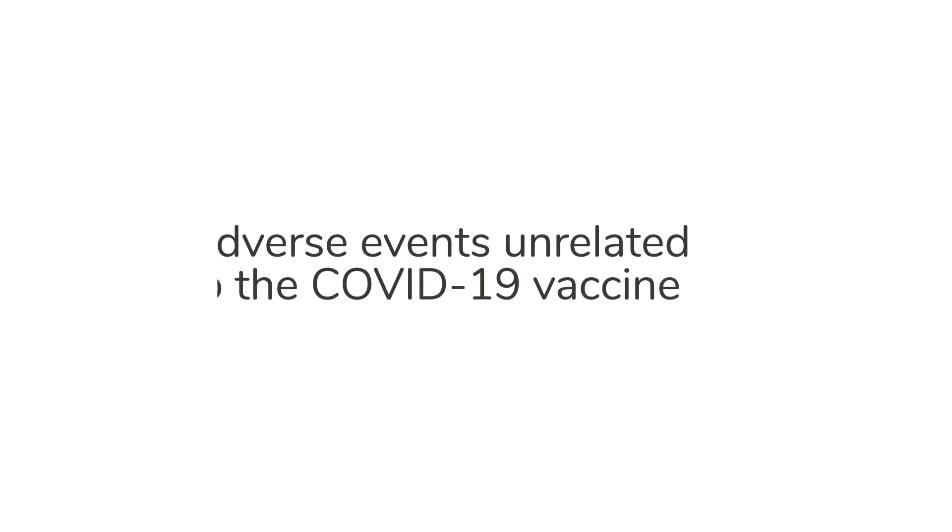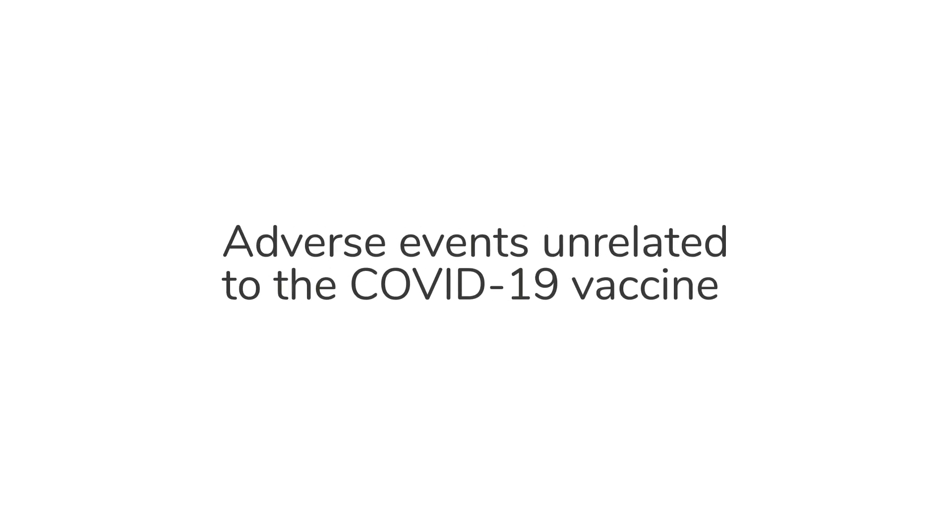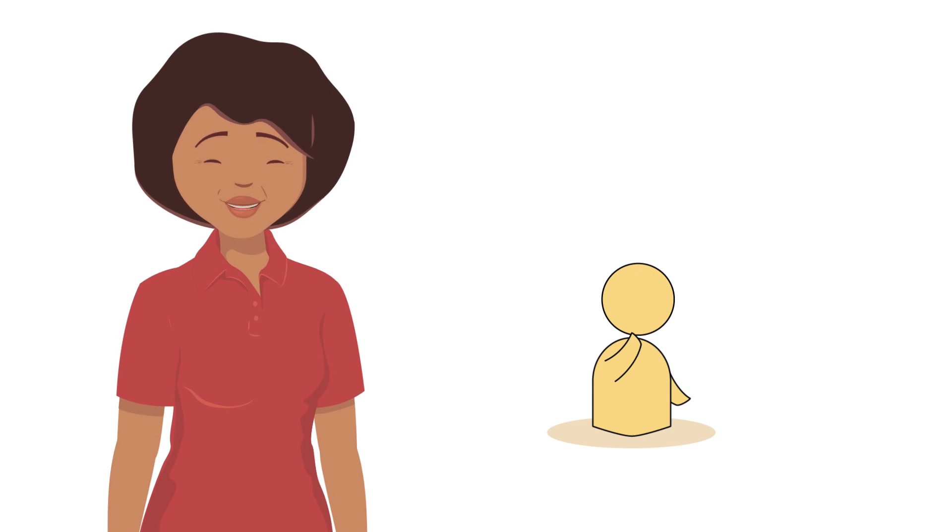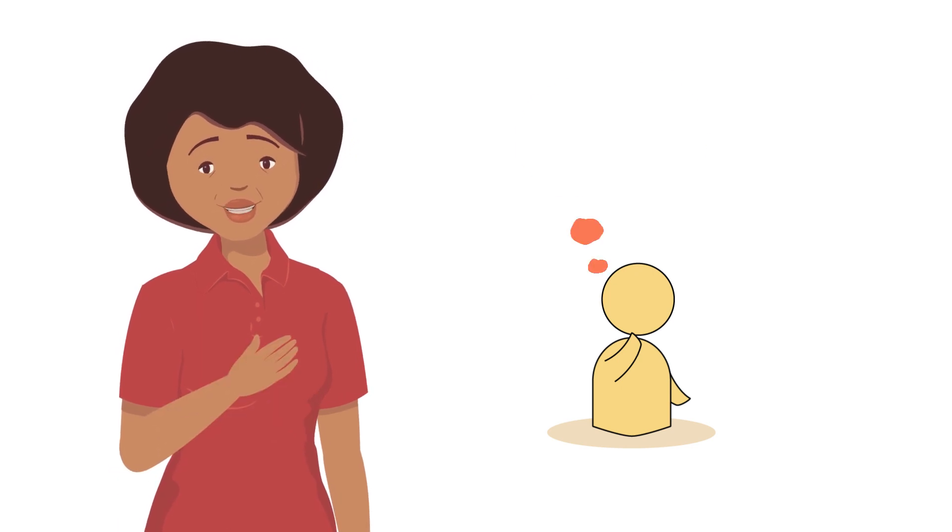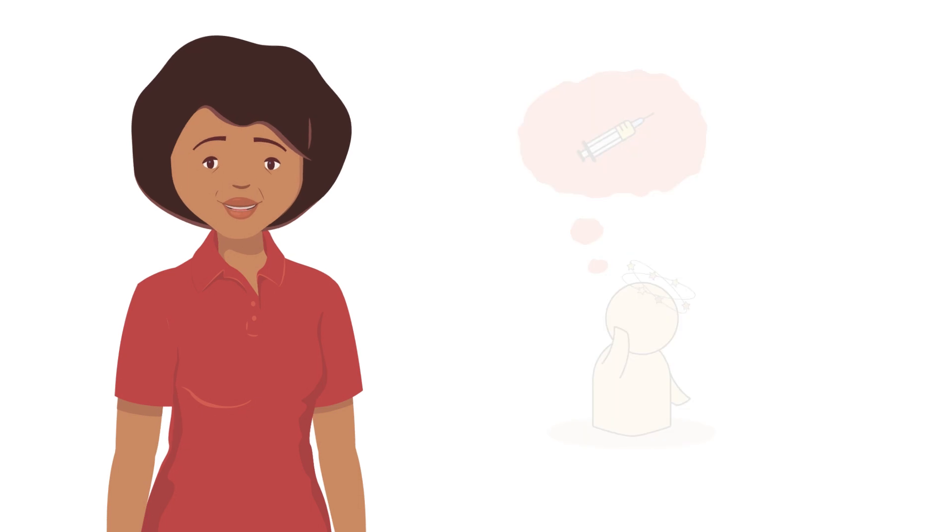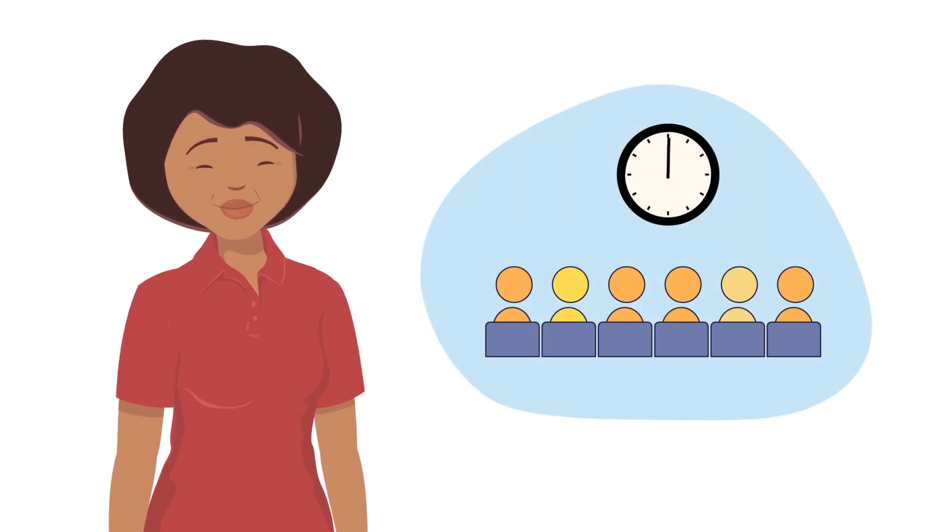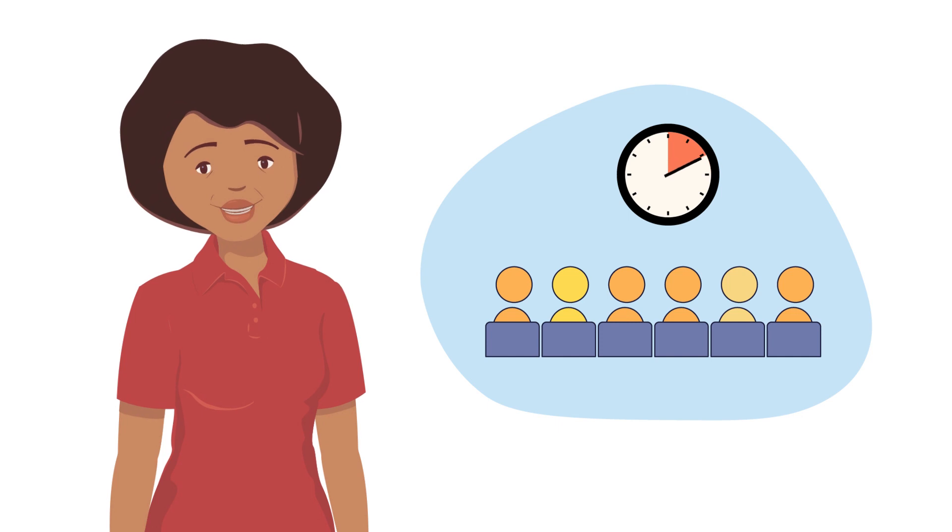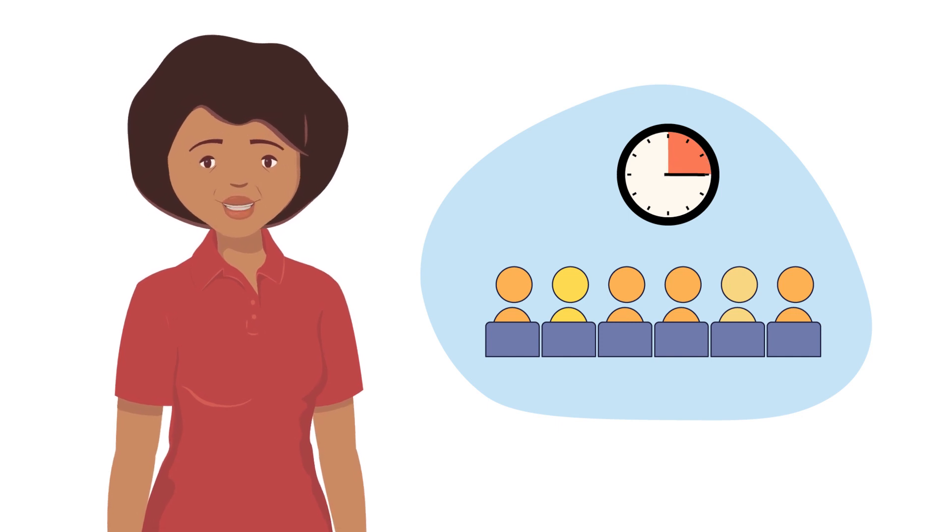Adverse events unrelated to the COVID-19 vaccine. Some adverse events that are unrelated to the contents of the vaccine may be caused by someone's fear about receiving a vaccine or other worries about getting sick. Fainting is one example. To help prevent fainting or to support those who do faint, people are asked to stay seated at the vaccination site for 15 minutes after receiving their vaccine dose.